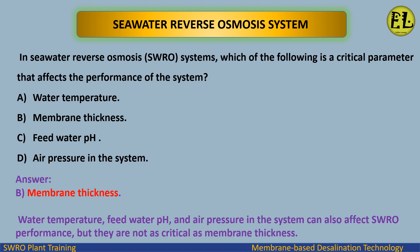The answer is B — membrane thickness. Water temperature, feed water pH, and air pressure in the system can also affect SWRO performance, but they are not as critical as membrane thickness.